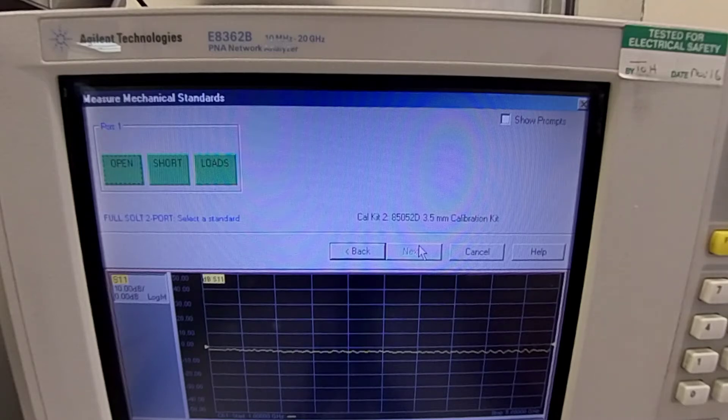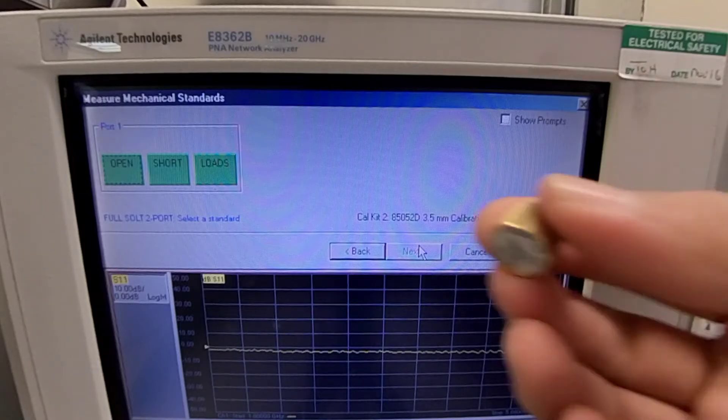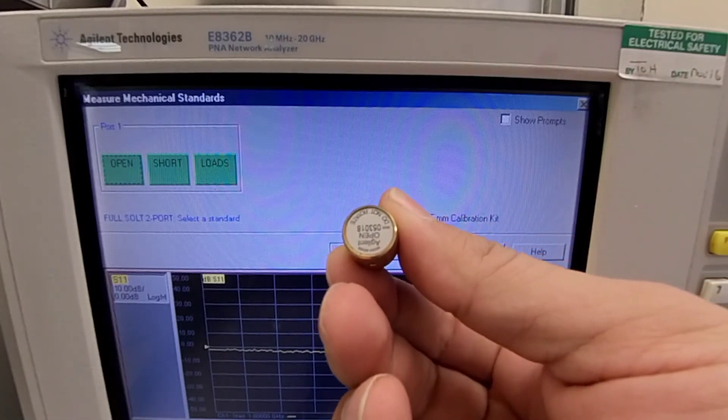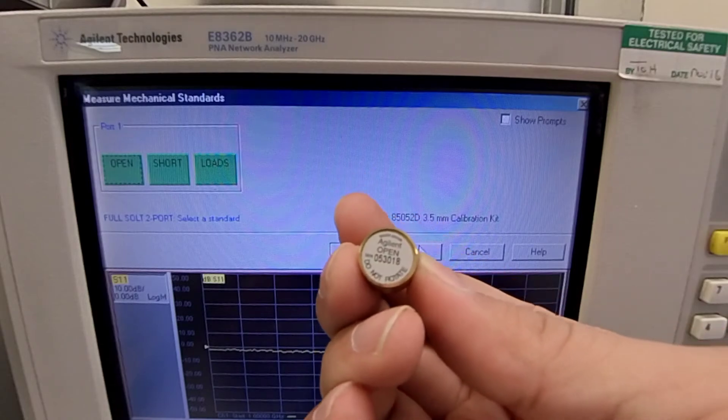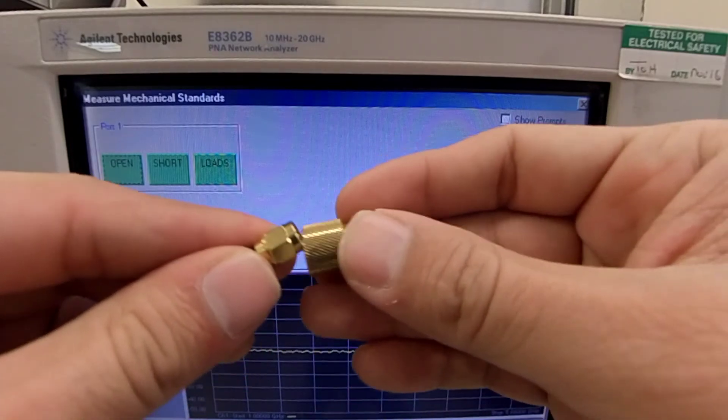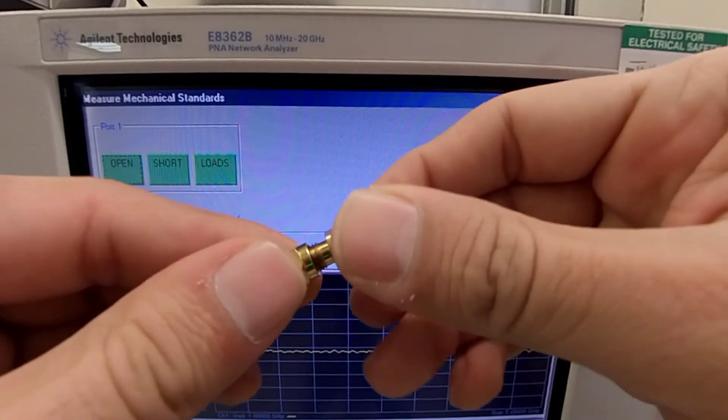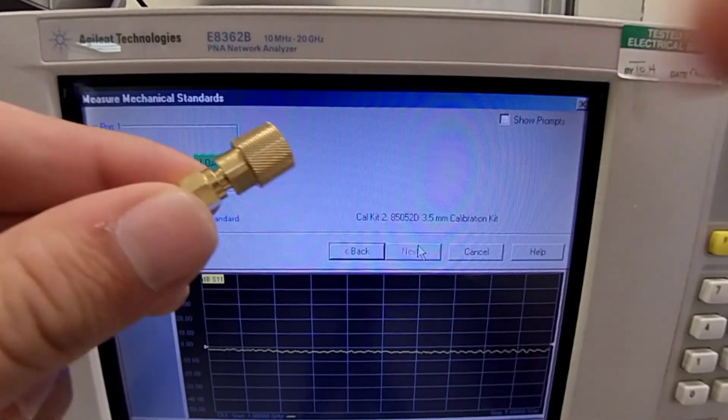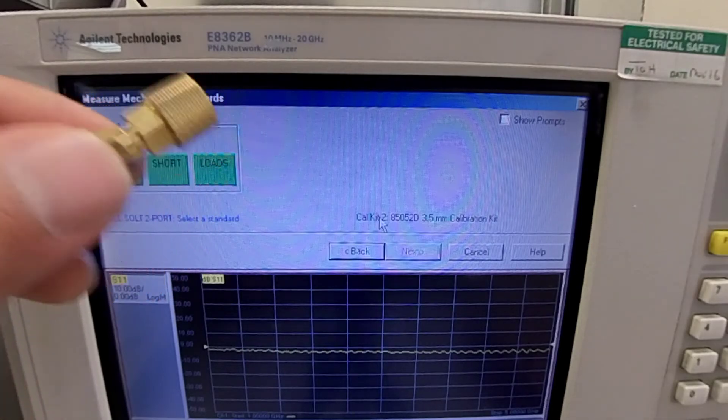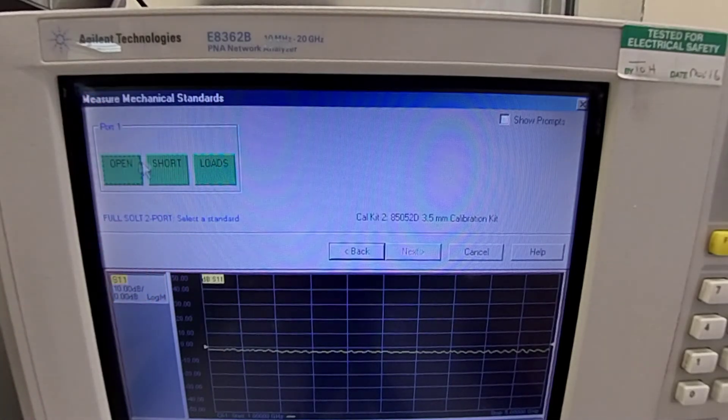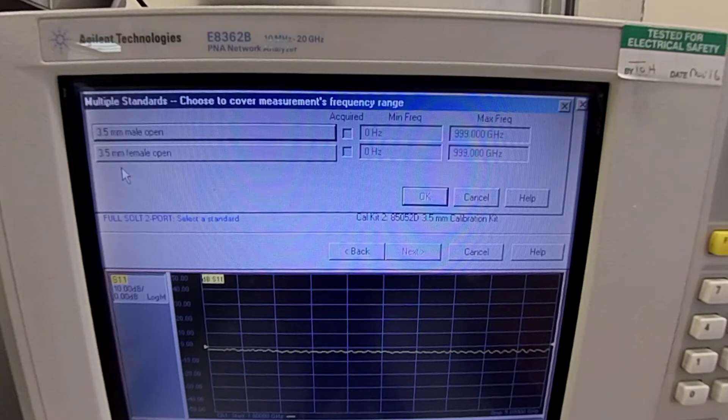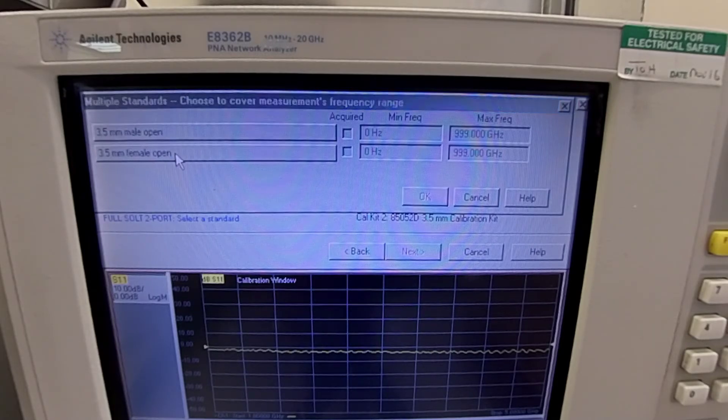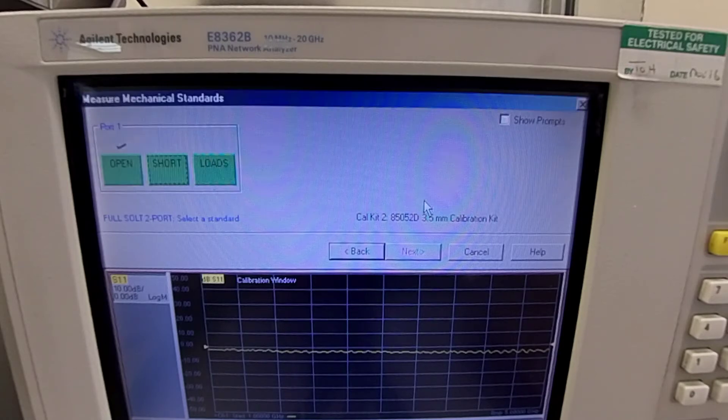Click next. And now we need to connect an open load as you can see. This is an open. And we will select connect the open as a load. Click on open. The connector we are using is 3.5 mm female. Select. Press OK. And now we are done.